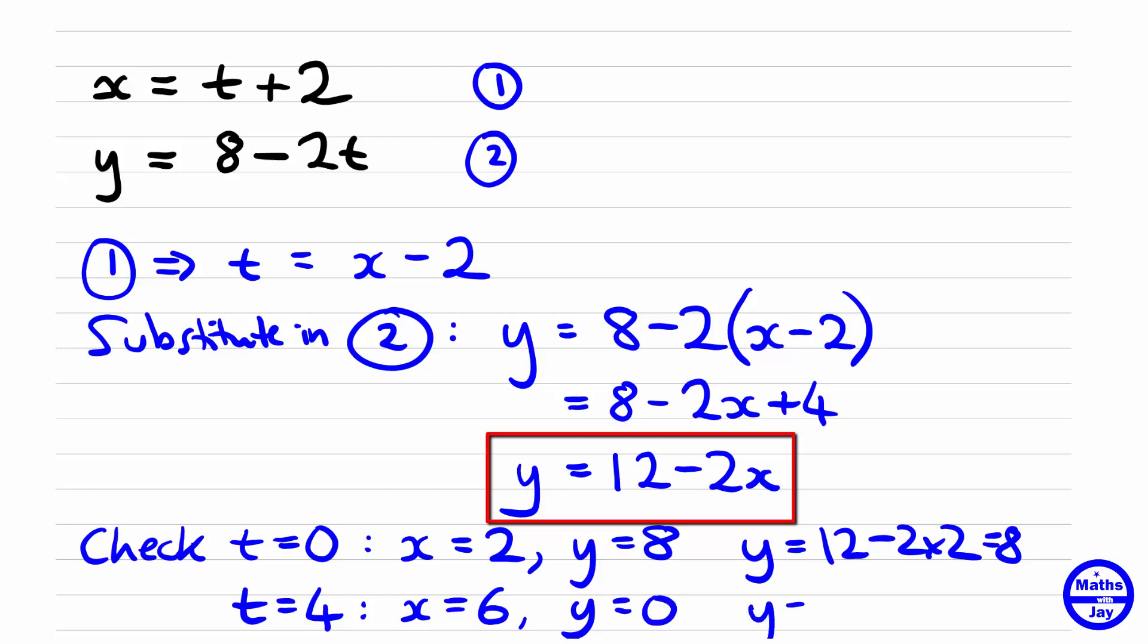Using our Cartesian equation to check that it's giving the right answer, we've got 12 minus 2 times 6, so that equals 0. That shows that again our equation is working, so it looks like y equals 12 minus 2x is correct.